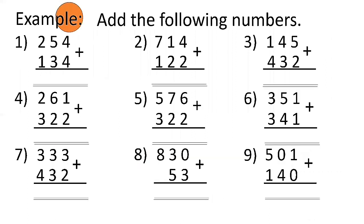Let's do these examples — add the following numbers. Number 1: 254 plus 134. 4 plus 4 is 8, 5 plus 3 is 8, 2 plus 1 is 3. So 254 plus 134 equals 388. Number 2: 714 plus 122.